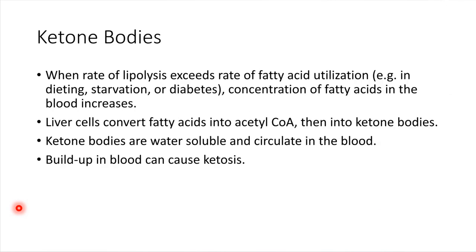Ketone bodies are produced when lipolysis — the breakdown of lipids — occurs at a rate that exceeds the rate at which we can use the fatty acids. When we're breaking down lipids more quickly than we can utilize them, the liver will convert some of these fatty acid molecules into ketone bodies. Acetone is one example. Ketone bodies are soluble and circulate in the blood, and when they start to accumulate, this can cause ketosis — a change in pH of the blood — which can be a very serious condition.